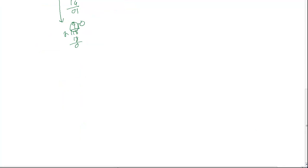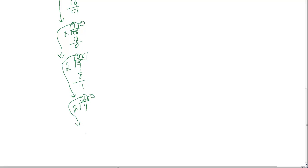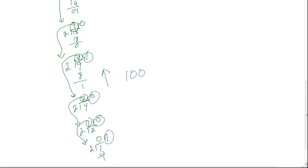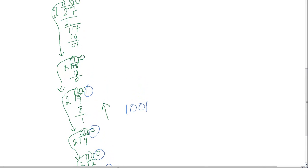Then we take the 9 and bring it down: 2 goes into 9, 4 times, that's 8, remainder of 1. Then we take the 4: 2 goes into 4, 2 times, remainder of 0. Take the 2: 2 goes into 2, 1 time, remainder of 0. Bring the 1 down: 2 goes into 1, 0 times, remainder of 1. And all you do now is read upwards, take the remainders, and write them down: 1, 0, 0, 1, 0, 1.